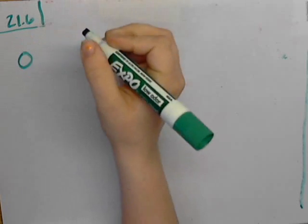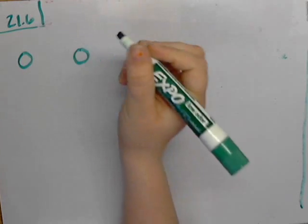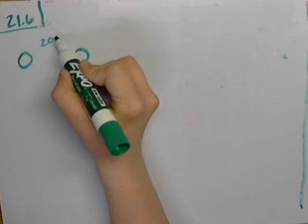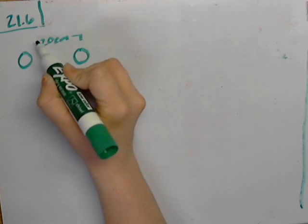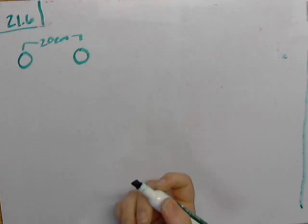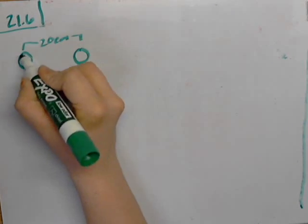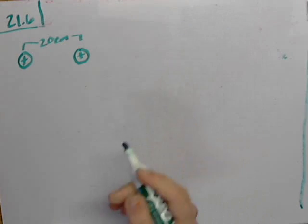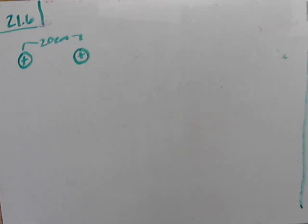We're talking about two small spheres that are 20 centimeters apart that have equal charge. So we're going to go ahead and choose a positive charge just to label it. And now they're asking us how many electrons are present on each sphere if the force of repulsion is 4.57 times 10 to the negative 21 newtons.